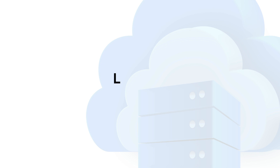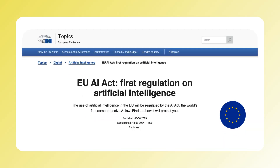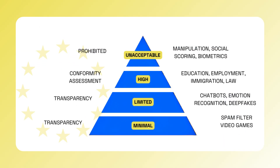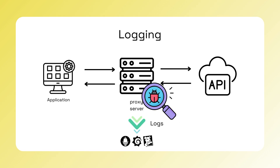Second, logging. With regulations like the EU AI Act, companies may need to provide evidence of how they use AI. By centralizing AI access through a gateway, organizations can place controls and logs on AI traffic, maintaining auditing capabilities. This is also useful for debugging and continuously improving AI applications.